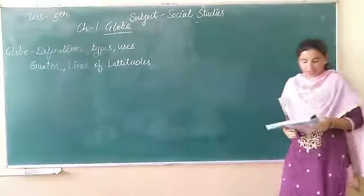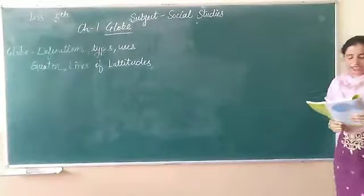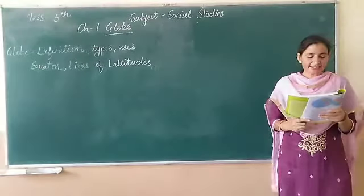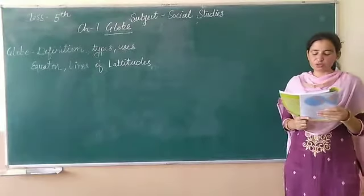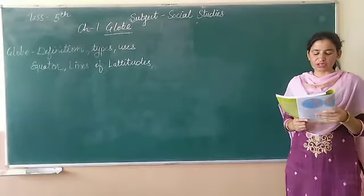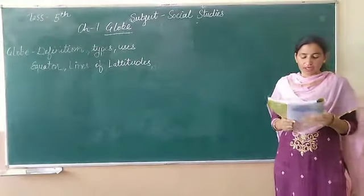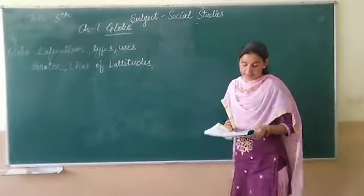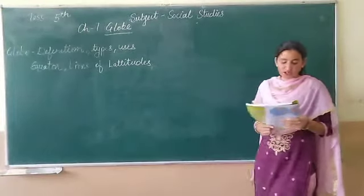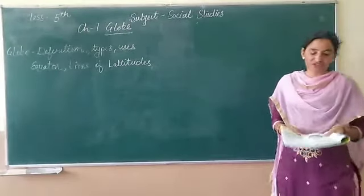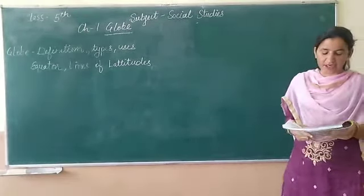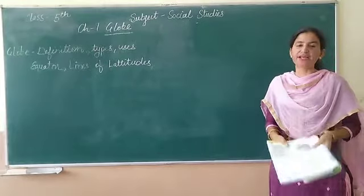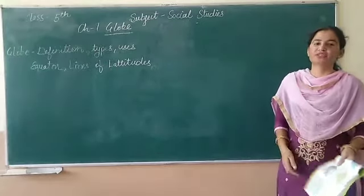Lines of longitude: the lines that run from the North Pole to the South Pole are of equal length. Their total number is 360 and they are called meridians, or lines of longitude.